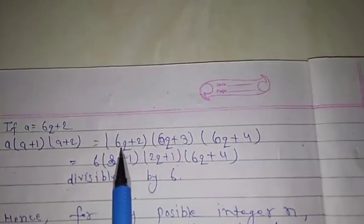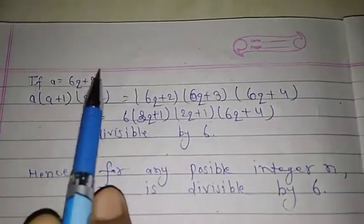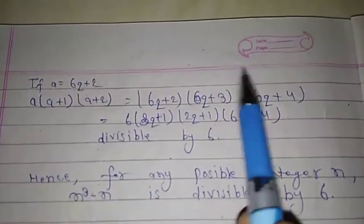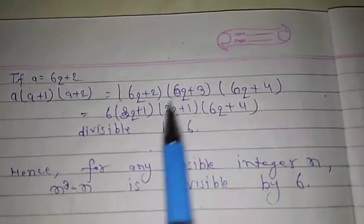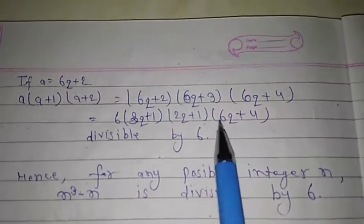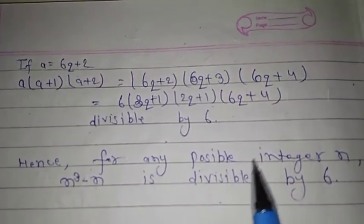We can take values of a = 6q+3, 6q+4, and 6q+5. In all cases, we find that every term is divisible by 6. Hence, for any positive integer n, n³ - n is divisible by 6.